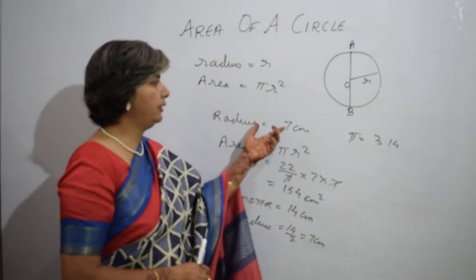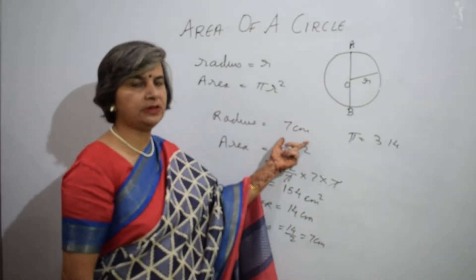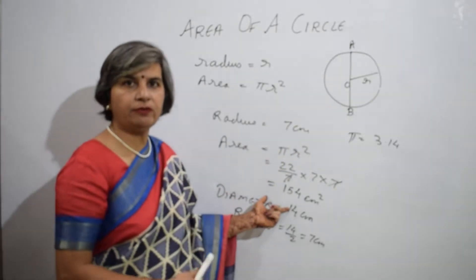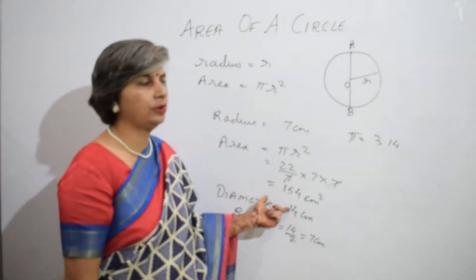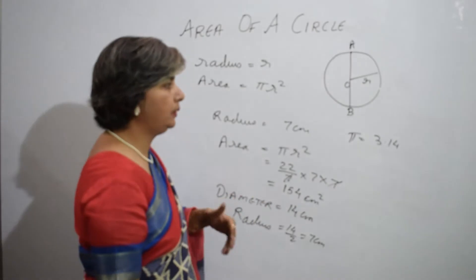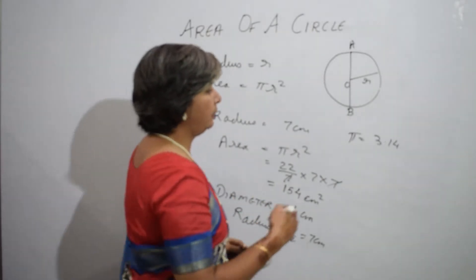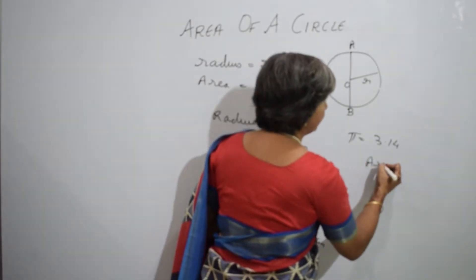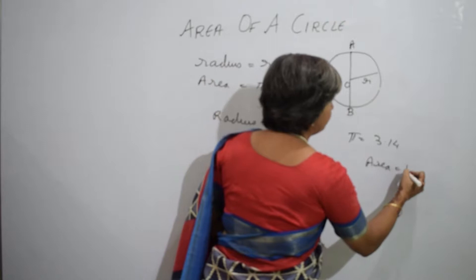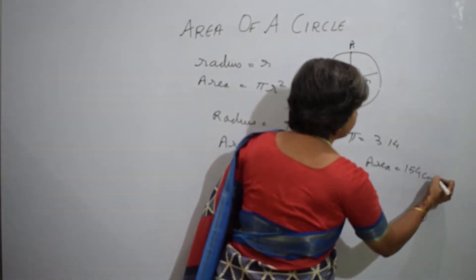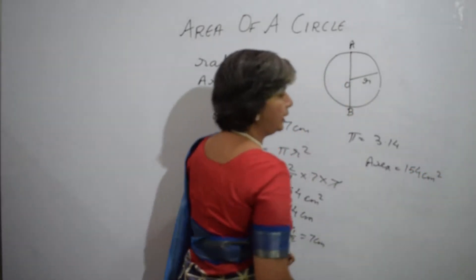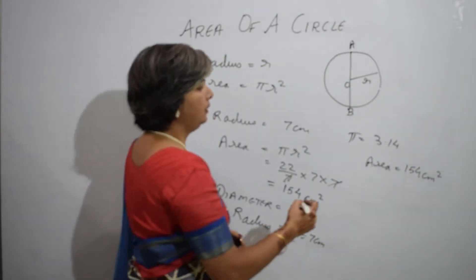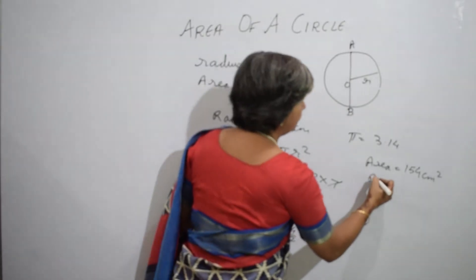The question can be given that we have an area of 154 centimeter square and we are supposed to find the radius. As in this example I took radius as 7 centimeters and calculated the area as 154 centimeter square, it can be the other way round — given the area as 154 centimeter square, find the radius of the circle.